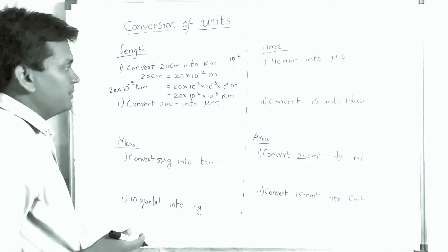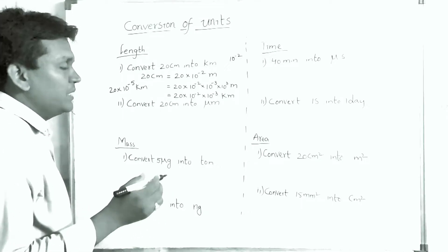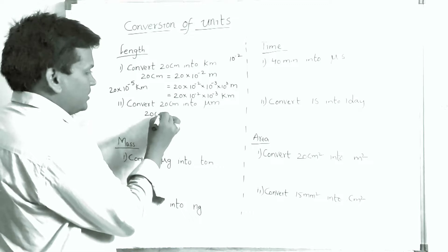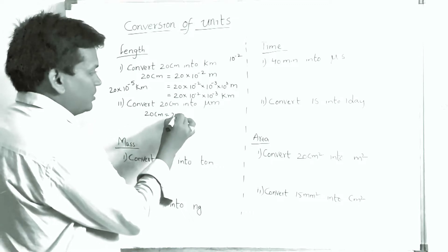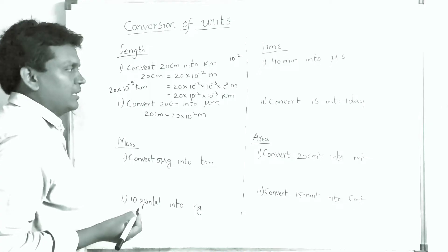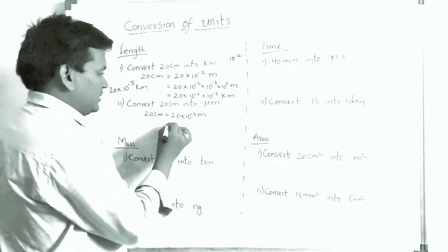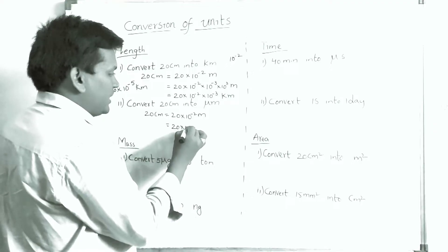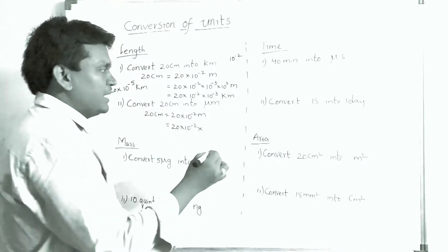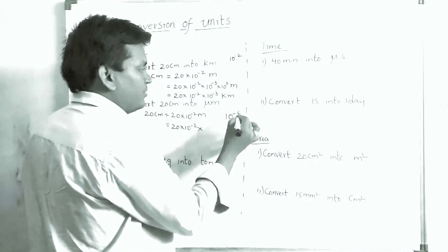Next conversion: convert 20 centimeters into micrometers. Same process — first convert centimeters into meters: 20 cm = 20 × 10⁻² meter. Now we have to convert this meter into micrometers. We write 20 × 10⁻² × (micro value). Micro value is 10⁻⁶.